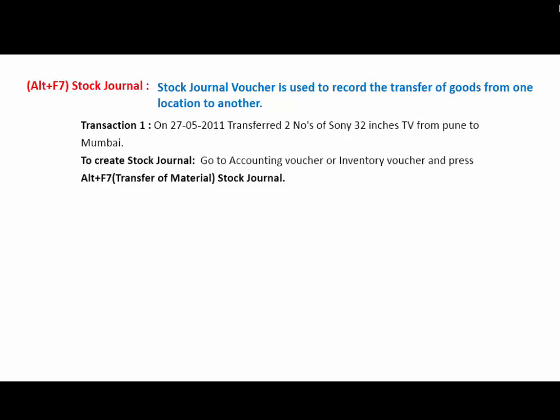The next voucher type is Stock Journal — the key used is ALT+F7. Stock Journal voucher type is used to record the transfer of goods from one location to another; it means transfer of material from one godown to another. For example, transfer 2 units of Sony 32-inch TV from Pune to Mumbai godown. For this, go to Inventory Vouchers and press ALT+F7 for Transfer of Material or Stock Journal voucher type.